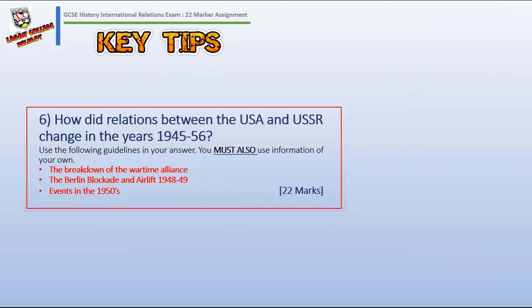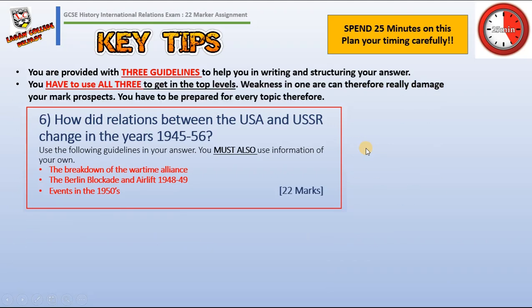Here's a type of 22-mark question you could get: 'How did relations between the United States of America and the USSR change in the years 1945 to 1956?' It's asking how relations changed between those two superpowers in that date range. It's also asking you to follow three guidelines and combine that with your own knowledge. You have to show a combination of both to get top marks. These three guidelines are highly important — you have to use all three to stand any chance of getting into the top levels.